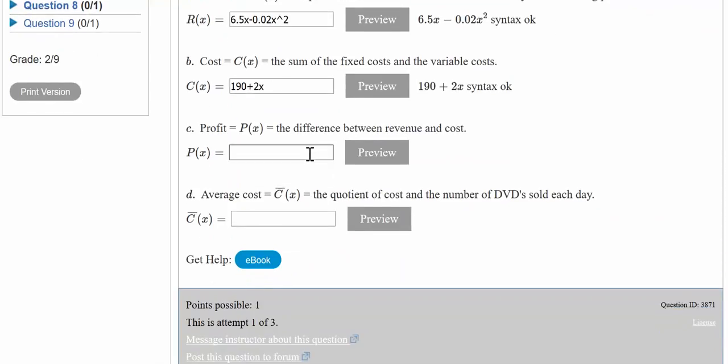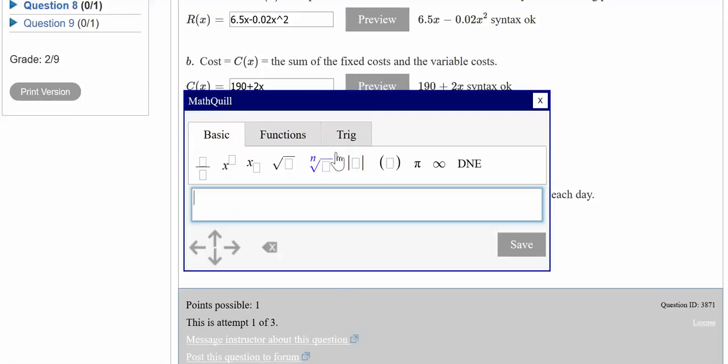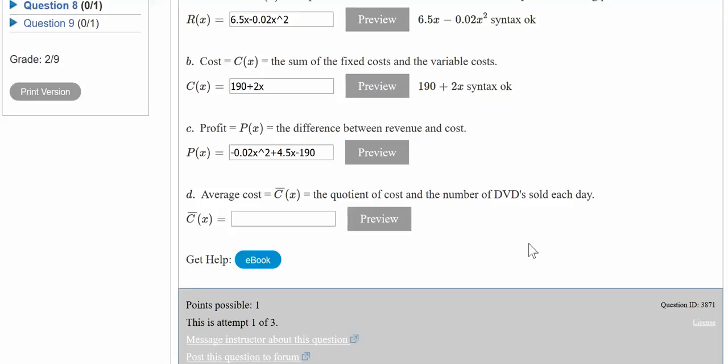The profit function was a long one. Let me enter that by formula: negative 0.02x to the second power, plus 4.5x minus 190. Save it and preview to make sure that's what I wanted to enter.